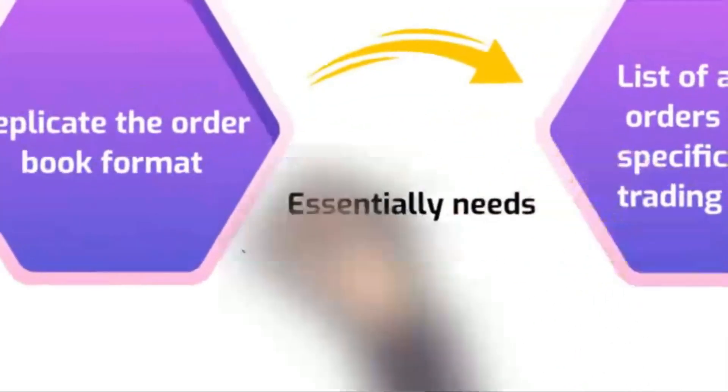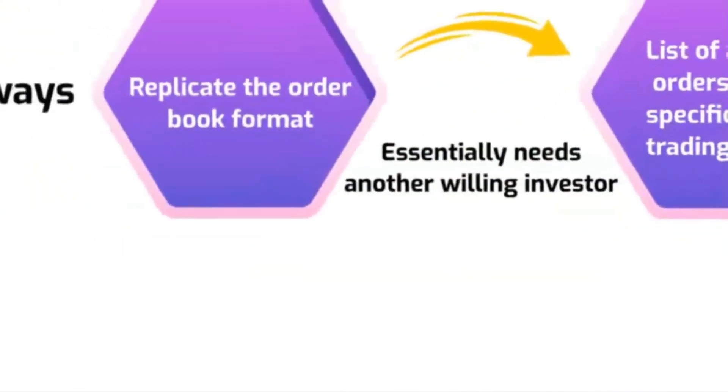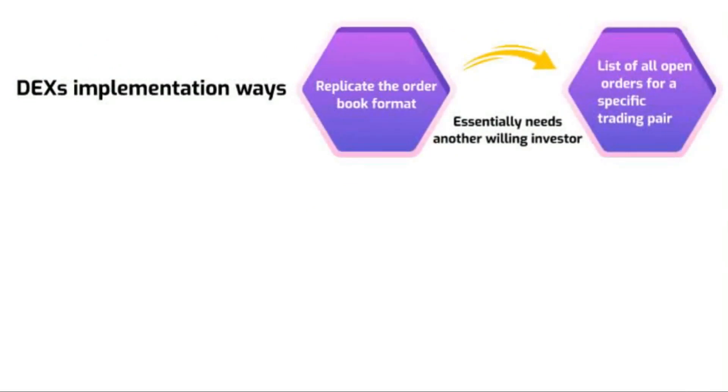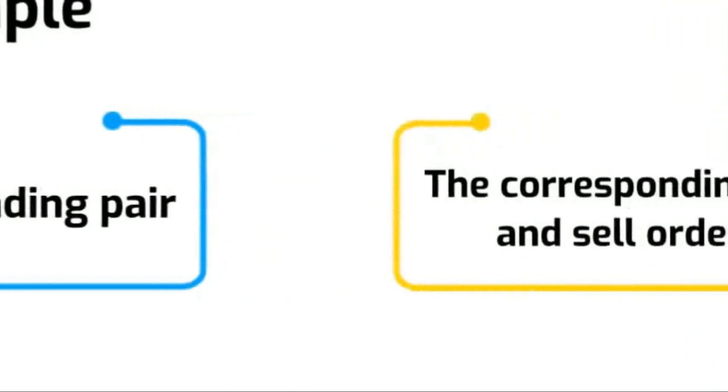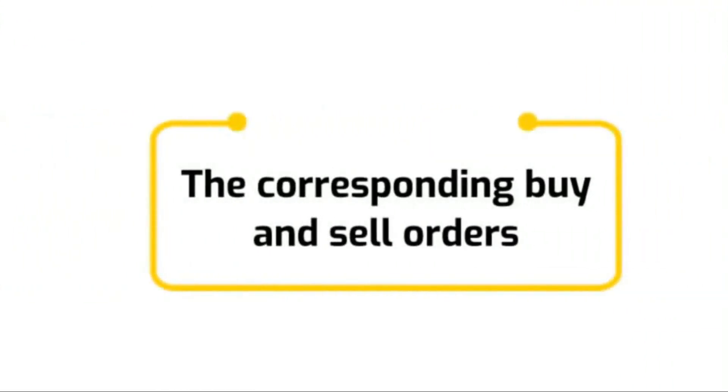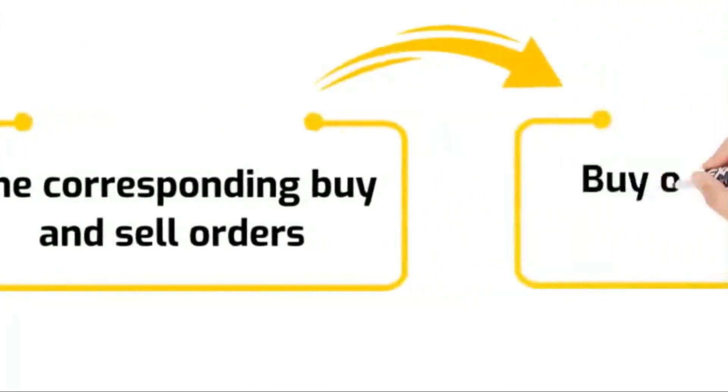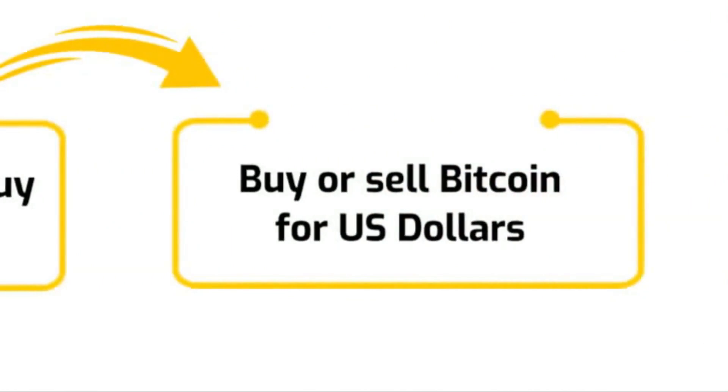An open order is essentially another investor saying they are willing to buy or sell an asset at a specific price. An example of an order book could be for the BTC-USD trading pair. The order book will have the corresponding buy and sell orders that customers have placed on the exchange to either buy or sell BTC-USD.